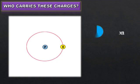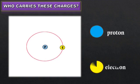Positive charges are carried by particles called protons, while negative charges, that is yellow in color, are carried by particles called electrons.